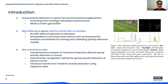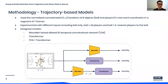We conducted a comprehensive analysis on a large-scale soccer dataset provided by SportLogic. For our trajectory-based models, we took advantage of normalized player and ball locations on the pitch over T frames. We experimented with different types of input, such as only including the ball location, ball and all player locations, and ball and the K nearest players to the ball.